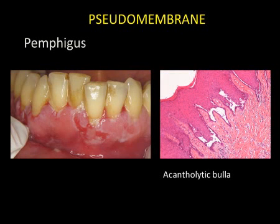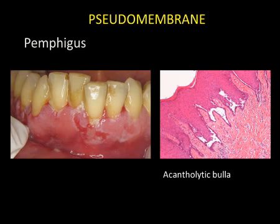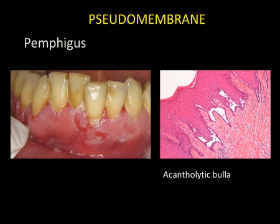Pemphigus is an autoimmune disease characterized by the production of antibodies which act against epithelial cell junctional proteins. There is an intraepithelial bulla which manifests as an erosion. The mucosa next to the erosion is slightly detached, which gives it a whitish color.